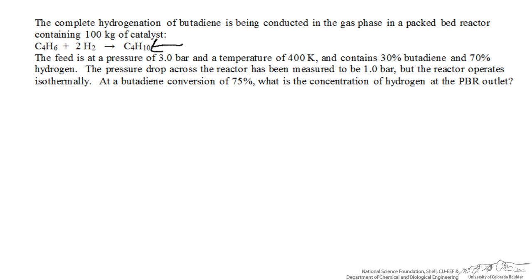We specifically want to know what will be the concentration of hydrogen exiting the reactor when the conversion of the limiting reactant, which is butadiene in this case, is 75%.